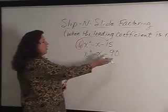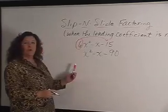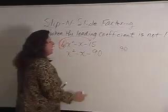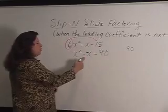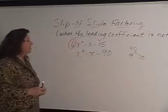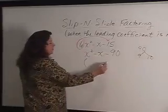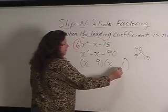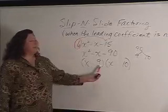Then we have a nice trinomial that we can factor with a leading coefficient of 1. We look at the factors of 90 that have a difference of 1. So our factors of 90 that have a difference of 1 are 9 and 10. So we factor the trinomial with the 9 and the 10.